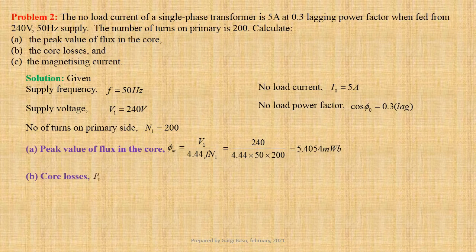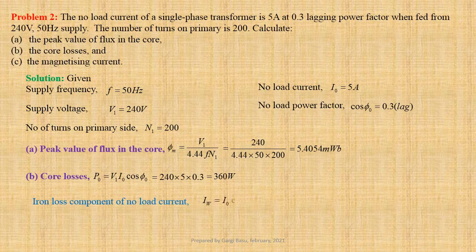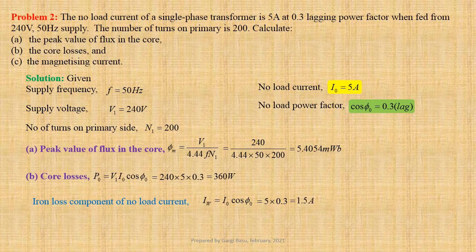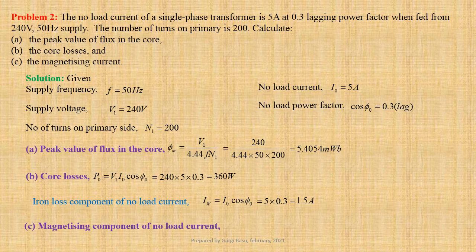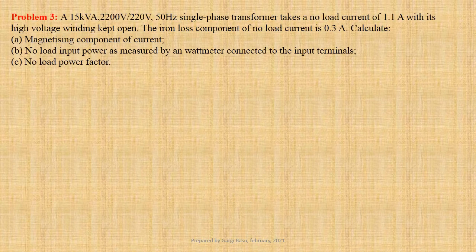Core losses P0 equals V1 into I0 cos phi 0, that is equal to 240 into 5 into 0.3, which gives us 360 Watts. Iron loss component of no load current Iw equals I0 cos phi 0, that is equal to 5 into 0.3, which gives us 1.5 Ampere. Magnetizing component of no load current Im equals root over I0 square minus Iw square, that is equal to root over 5 square minus 1.5 square, which gives us 4.7697 Ampere.